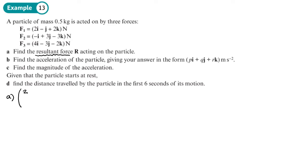So (2, -1, 2) plus (-1, 3, -3) and then F3 is (4, -3, -2). So that gives you F1 plus F2 plus F3. I'm going to get in the top row 2 minus 1 is 1 plus 4 is 5, and -1 plus 3 is 2, 2 minus 3 is -1, 2 plus -3 is -1, -1 minus 2 which is -3.